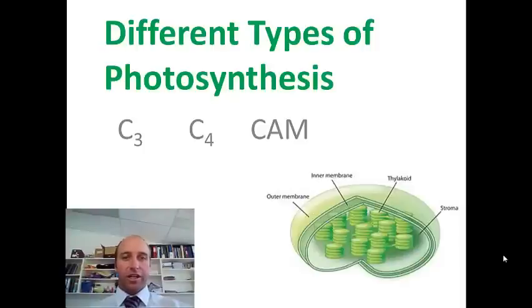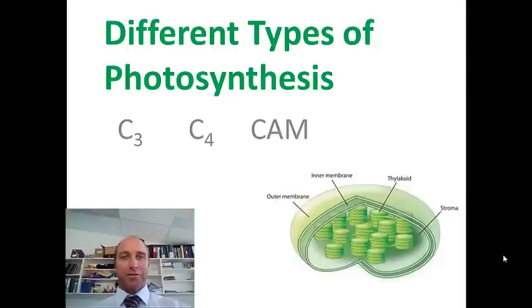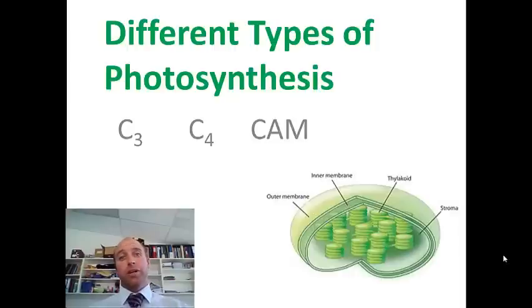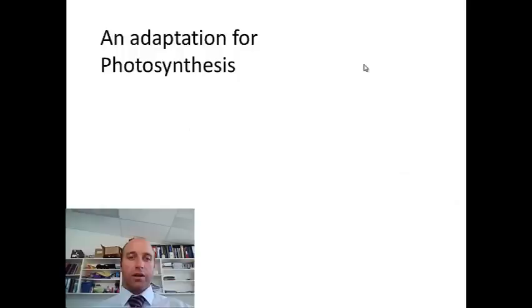Welcome to our screencast. We're going to be talking about some different types of photosynthesis. I know you thought you'd learned all there was about photosynthesis, but there are a couple of different types we're going to look at: C3, C4 and CAM photosynthesis. Although these are really complex reactions, we are just going to look at a summary of the differences between some of these reactions.